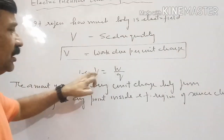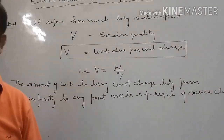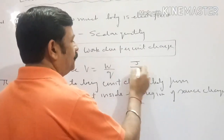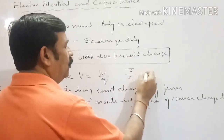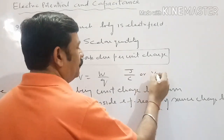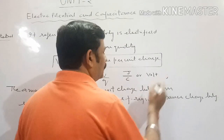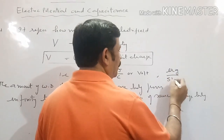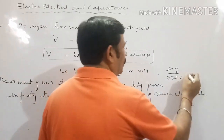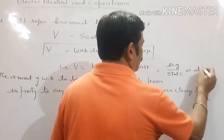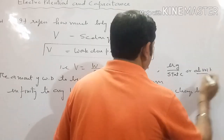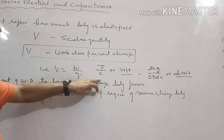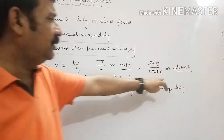Since electric potential is the ratio of work done and charge, the unit of electric potential will be either joule per coulomb, which is known as volt. Joule per coulomb or volt is the SI unit, and there is also a CGS unit called the ab volt.